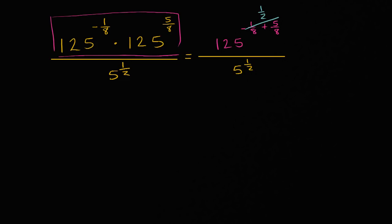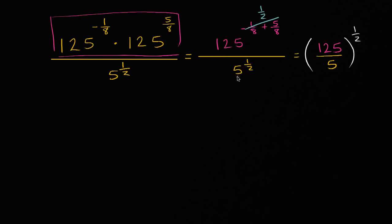That's going to be the same thing — equivalent to 125 over 5, all to the 1/2 power. If I raise 125 to the 1/2 and I'm dividing by 5 to the 1/2, that's the same thing as doing the division first and then raising the quotient to the 1/2 power. Well, 125 divided by 5 is 25. And 25 to the 1/2 is the same thing as the principal square root of 25.